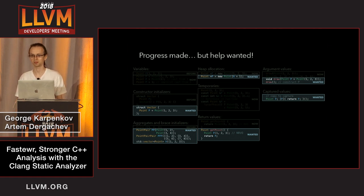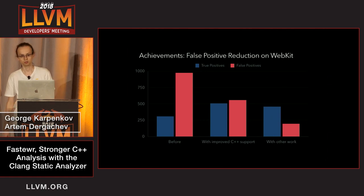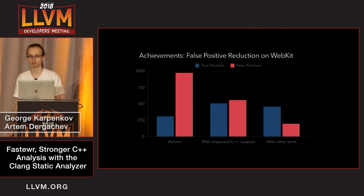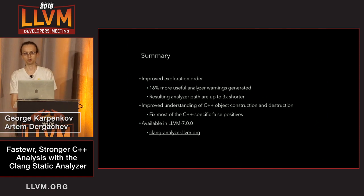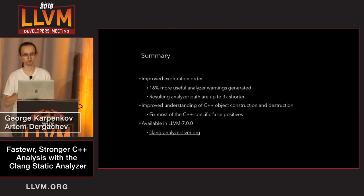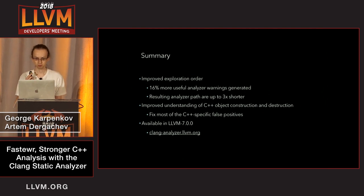The primary result was that we pretty much cut false positives in half on WebKit, which is a popular browser engine and a huge C++ code base. After fixing a couple more bugs in the Static Analyzer, it was finally usable and useful to WebKit developers — they were actually finding real bugs in their code. That's all I wanted to say about C++. If you have questions for George about finding more bugs and shorter reports, or to me about C++, we're happy to answer.